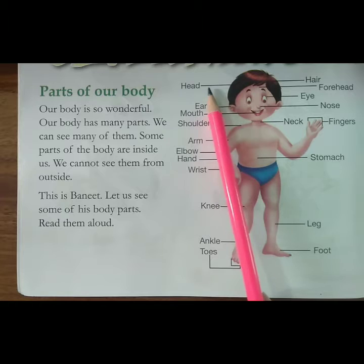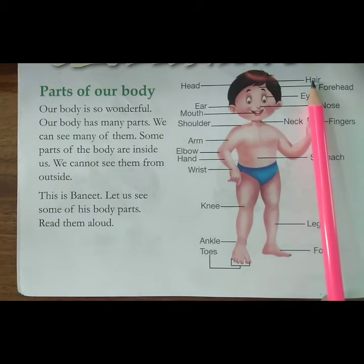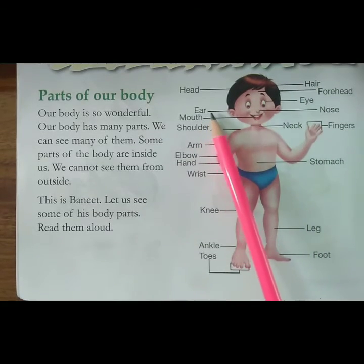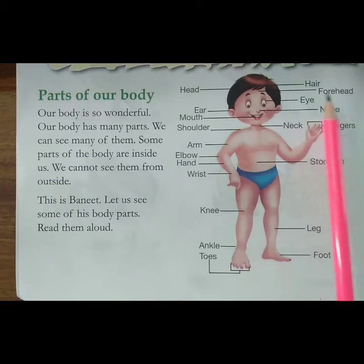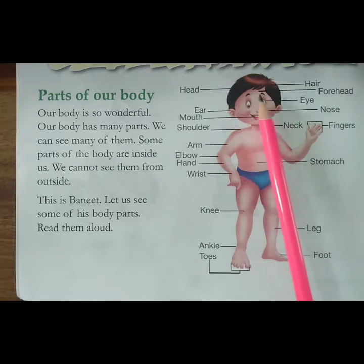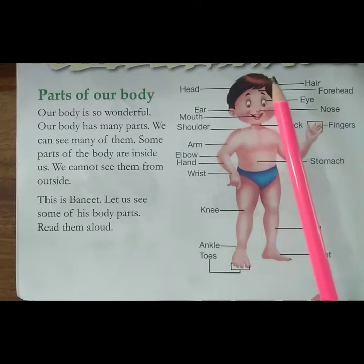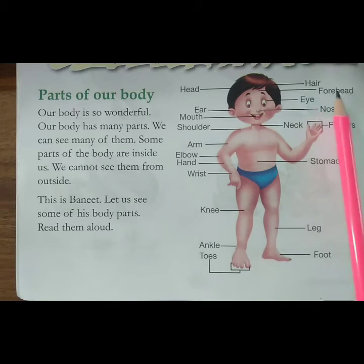First is Head — Head means sir. Hair — Hair means baal. Ear — Ear means kaan. Forehead — Forehead means lalat. The portion between the eyebrow and the head — that portion is known as forehead.